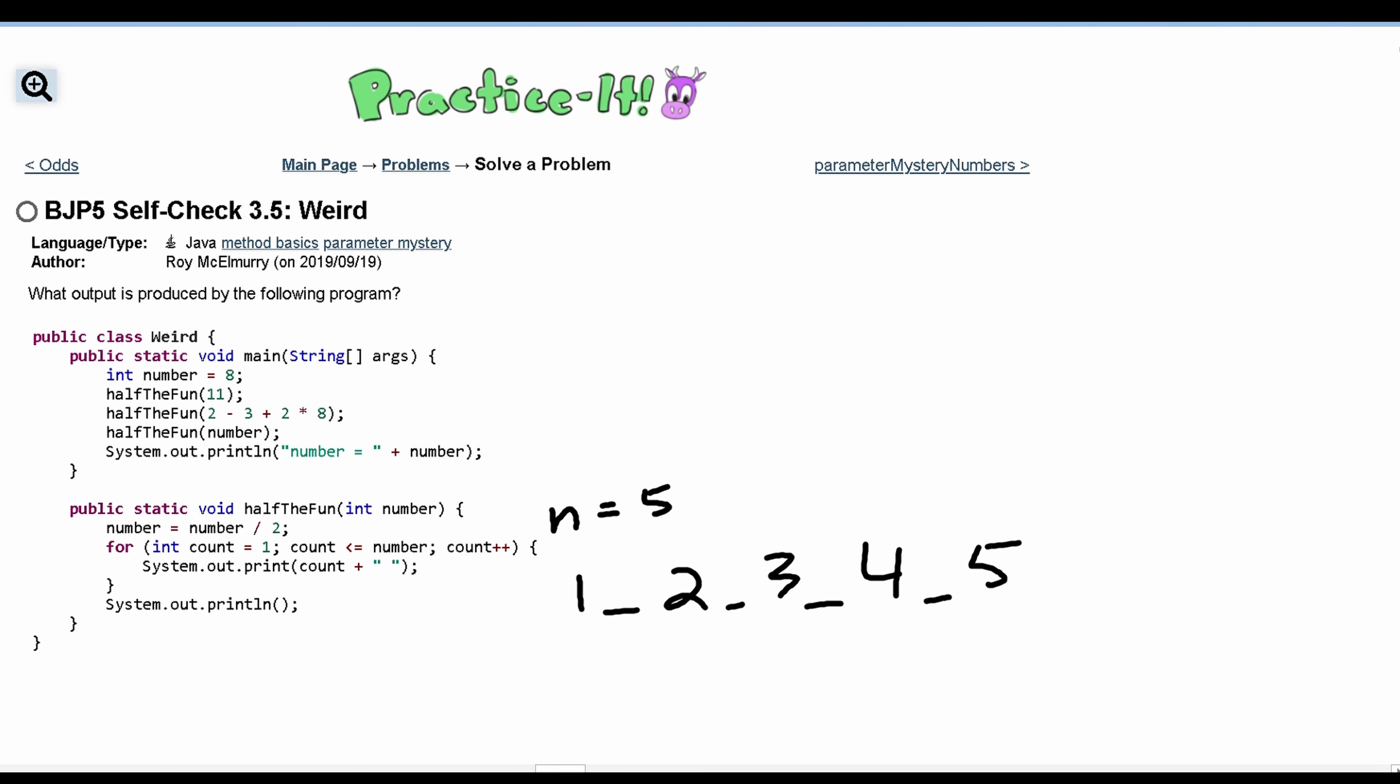So we can now go into this next method pass. We have 2 minus 3 which is negative 1 plus 16 so we have 15 here. So we're passing in n is equal to 15.